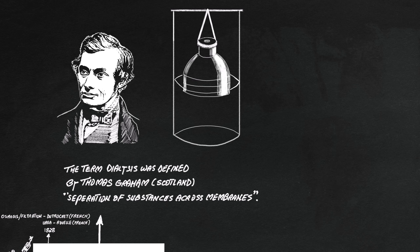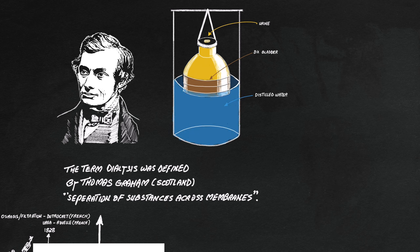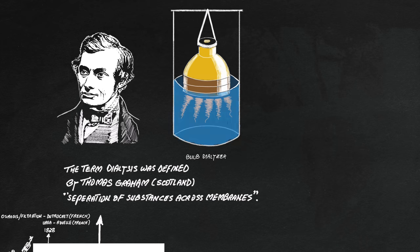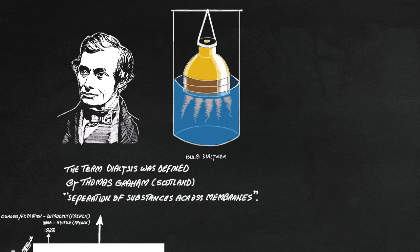He experimented with various membranes. In this example, we see urine in an ox bladder and urea diffusing out. After about 24 hours, in his words, crystal constituents moved to the water and after evaporation, there was white saline mass. From this mass, urea was extracted with alcohol.